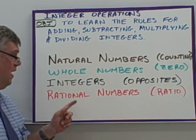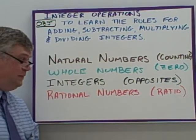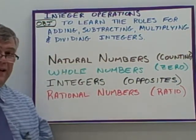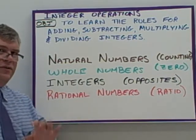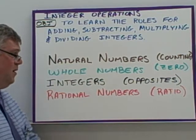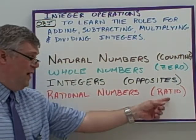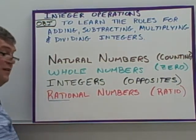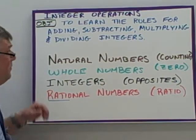Rational numbers are any number that can be expressed as a fraction. This actually includes all of the above, as well as decimals and fractions. It doesn't include irrational numbers, which we'll get to at another time. But ratio is another word for fraction — ratio, rational. Notice how they start with the same letters. Helpful tip there.